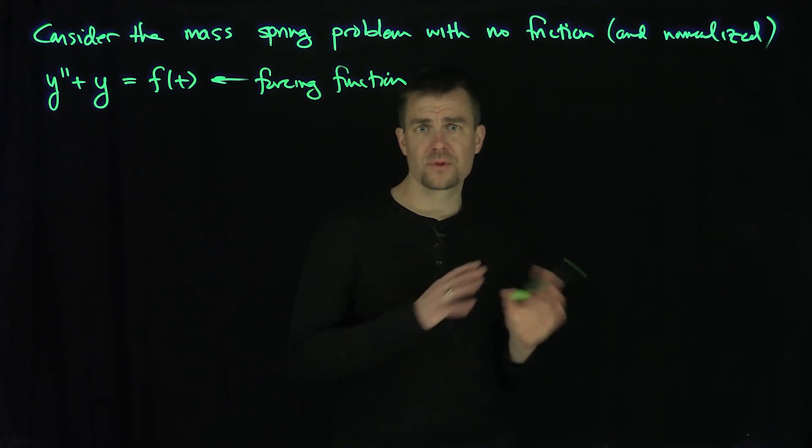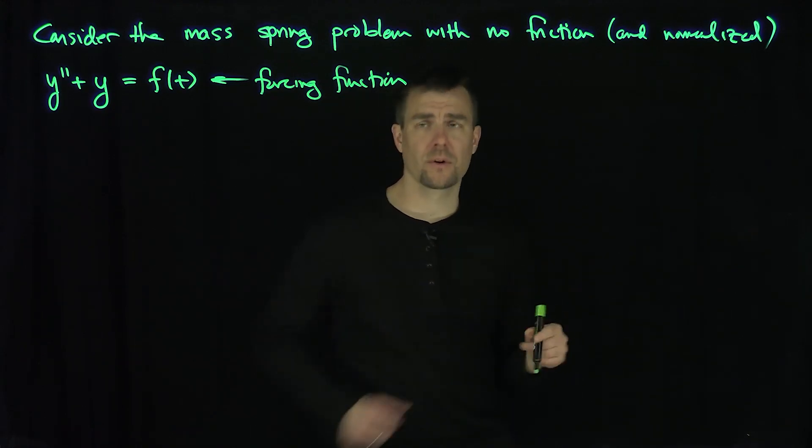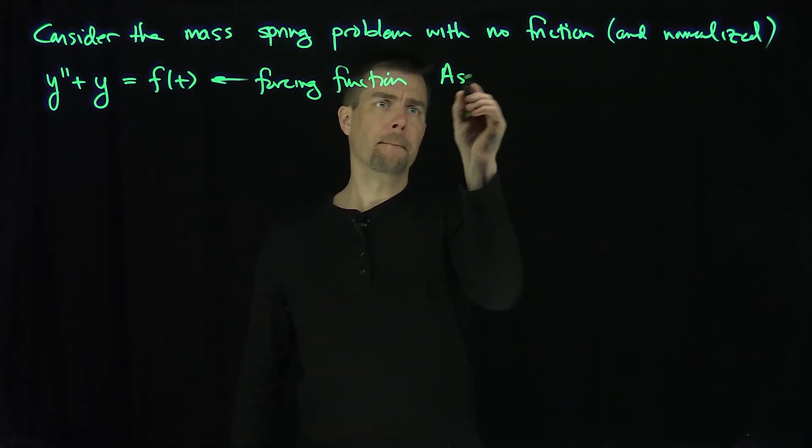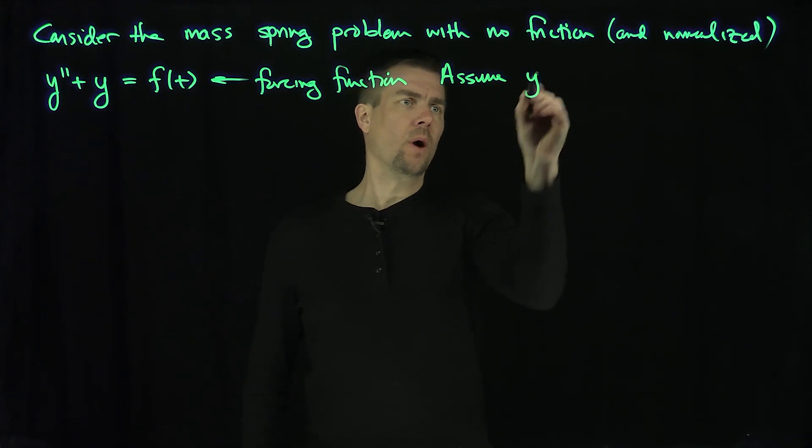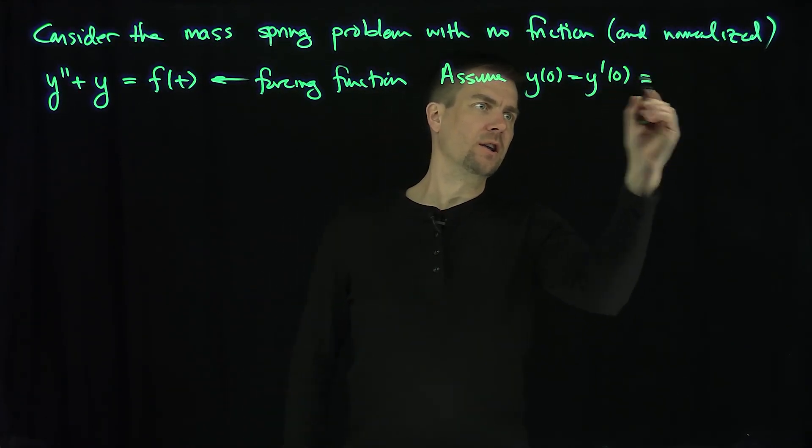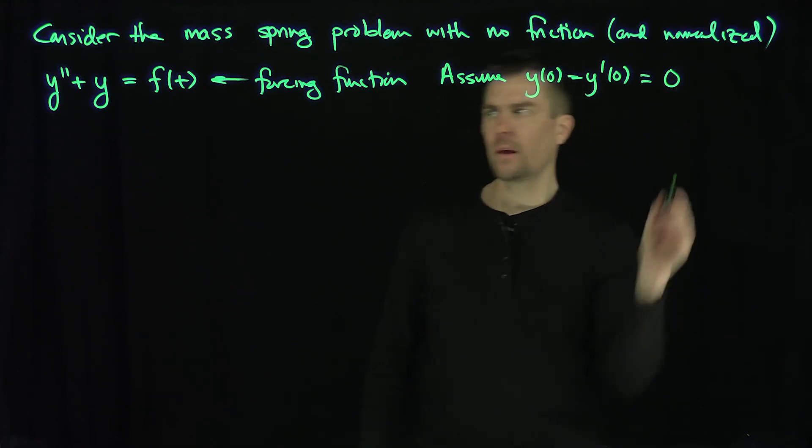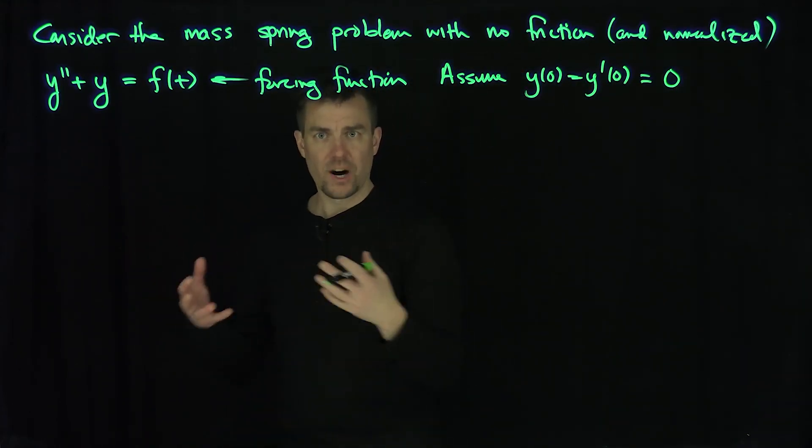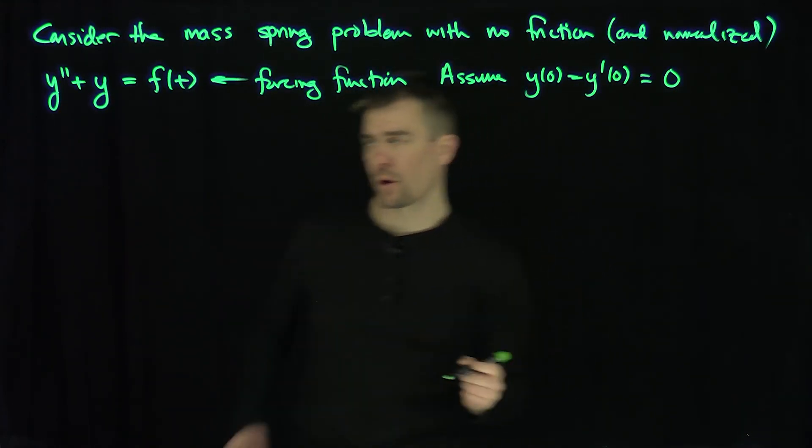I'm going to assume that y of 0 and y prime of 0 are 0 in this problem, and we're going to construct the Green's function. Assume y of 0, the initial displacement, and the initial velocity are equal to 0. And the forcing function is what's going to drive the string into motion.